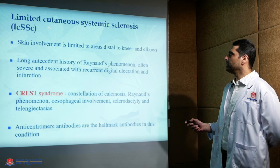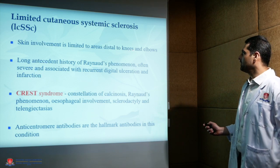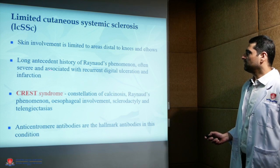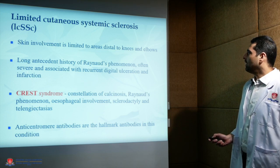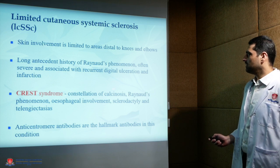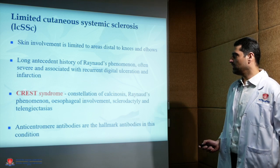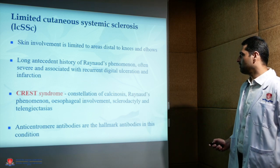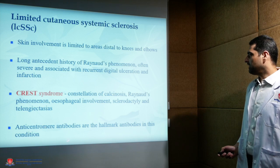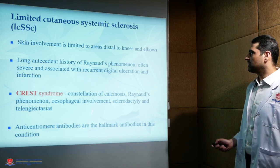In the limited cutaneous variant, skin involvement is limited to areas distal to knees and elbows. There is a long history of Raynaud's, often severe and associated with ischemia and ulceration. CREST syndrome is the constellation of calcinosis, Raynaud's, esophageal involvement, sclerodactyly, and telangiectasias. Anti-centromere antibodies are the hallmark antibodies in this condition.